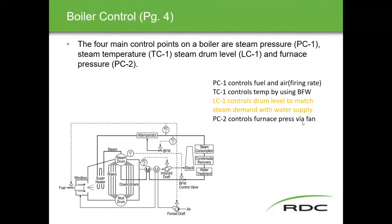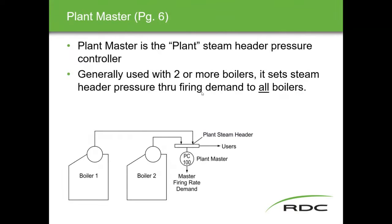The fourth control point is PC2, which controls the furnace pressure via a fan. A pressure transmitter on the side of the boiler feeds a signal to a damper on the draft fan — speeding up the fan decreases pressure in the boiler, slowing it down increases pressure. These are the four main measuring areas used for control in a boiler.